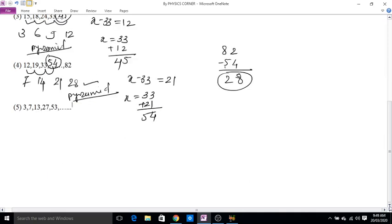And the last one: 3, 7, 13, 27, and 53. What is the next? 3 into 2 plus 1 equals 7. Again 7 into 2 minus 1 equals 13. 13 into 2 plus 1 is 27. 27 into 2 minus 1 is 53. 53 into 2 plus 1 is 107. This is geometric plus arithmetic.